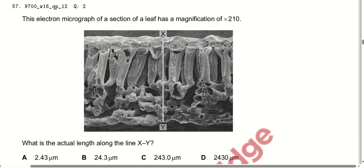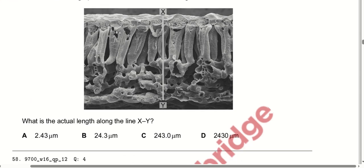An electron micrograph of a section of a leaf has a magnification of 210×. What is the actual length along line XY? XY is the measured length viewed through the microscope. When we calculate it, it comes out to be 243 micrometres.